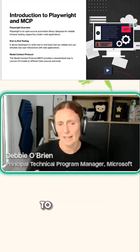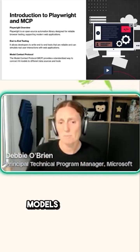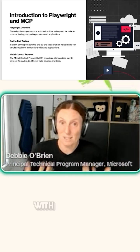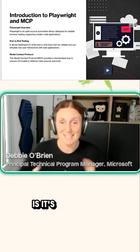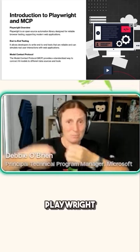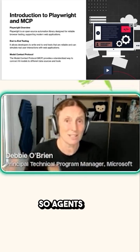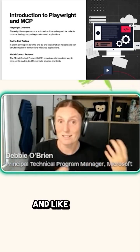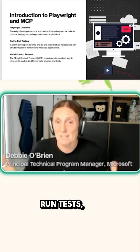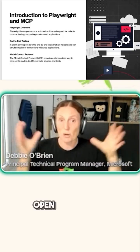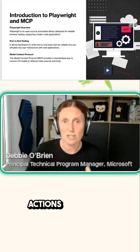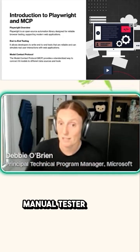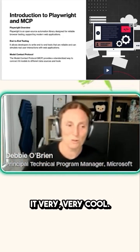The Model Context Protocol provides a standard way to connect AI models to different data sources and tools. What it does with Playwright is connect Playwright to agents, so agents can automate browsers — not just run tests, but actually open a website and perform all the actions that a user or a manual tester would do. That's what makes it very, very cool.